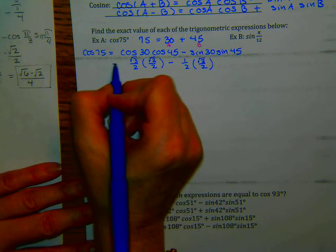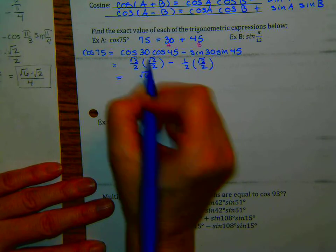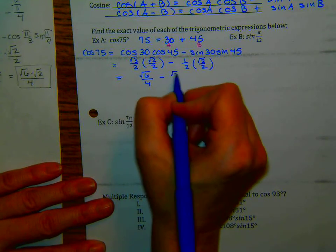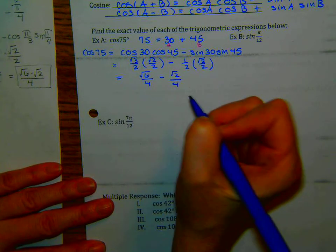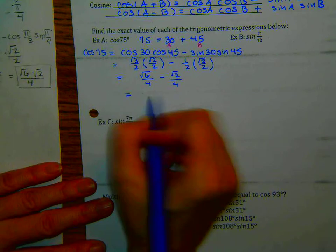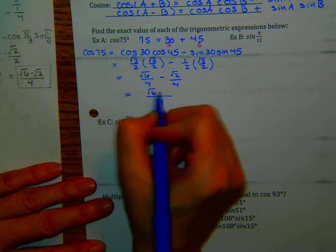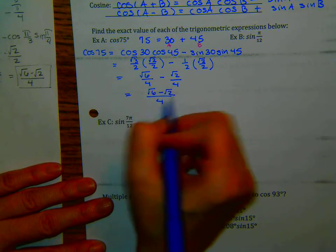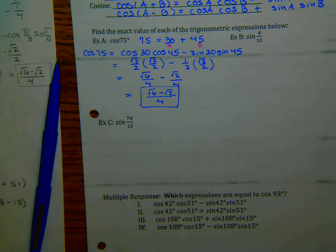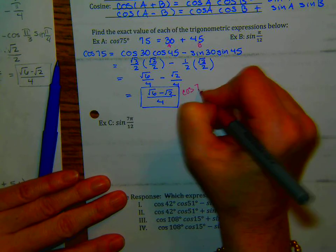Working it out, I get √6 over 4 — multiplying under the radical sign — minus √2 over 4. Now I have a common denominator and I get (√6 − √2) / 4. That is my final answer, and that is the cosine of 75 degrees.